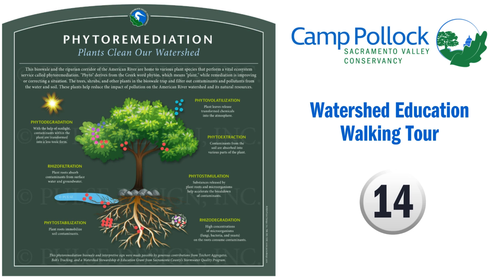Rhizofiltration: plant roots absorb contaminants from surface water and groundwater. Phytostimulation: substances released by plant roots and microorganisms help accelerate the breakdown of contaminants. Phytostabilization: plant roots immobilize soil contaminants. Result — degradation by high concentrations of microorganisms, fungi, bacteria, and yeasts on the roots that consume contaminants.